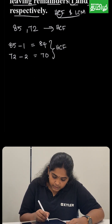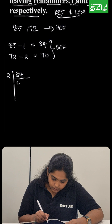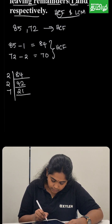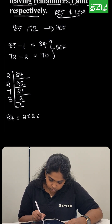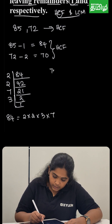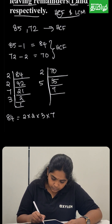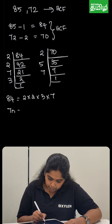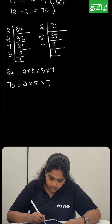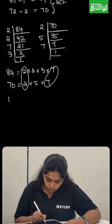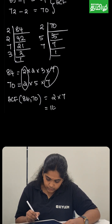Using prime factorization: 84 equals 2 × 2 × 3 × 7, and 70 equals 2 × 5 × 7. The HCF of 84 and 70 is 2 × 7, which equals 14. So the answer is 14.